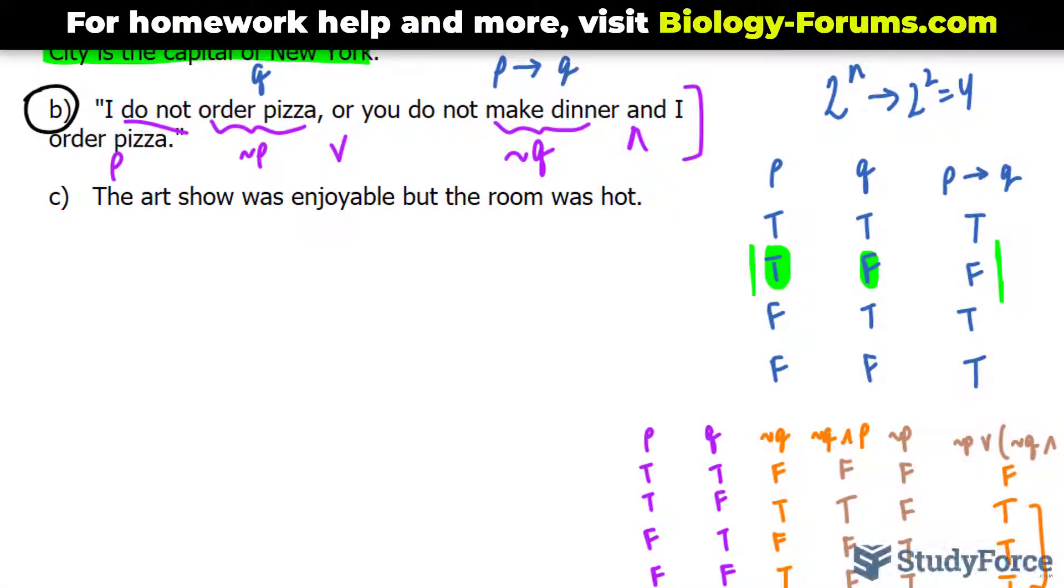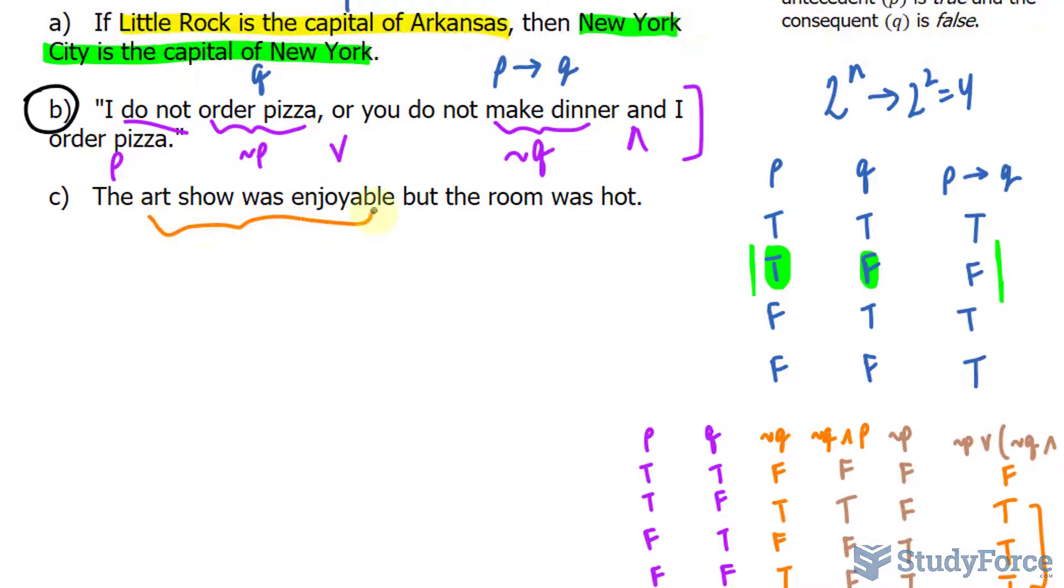We have two components making up this sentence. The first component is that the art show was enjoyable, but the room was hot. We'll call this component P and this component Q, and they're separated by but, which is a conjunction much like AND.